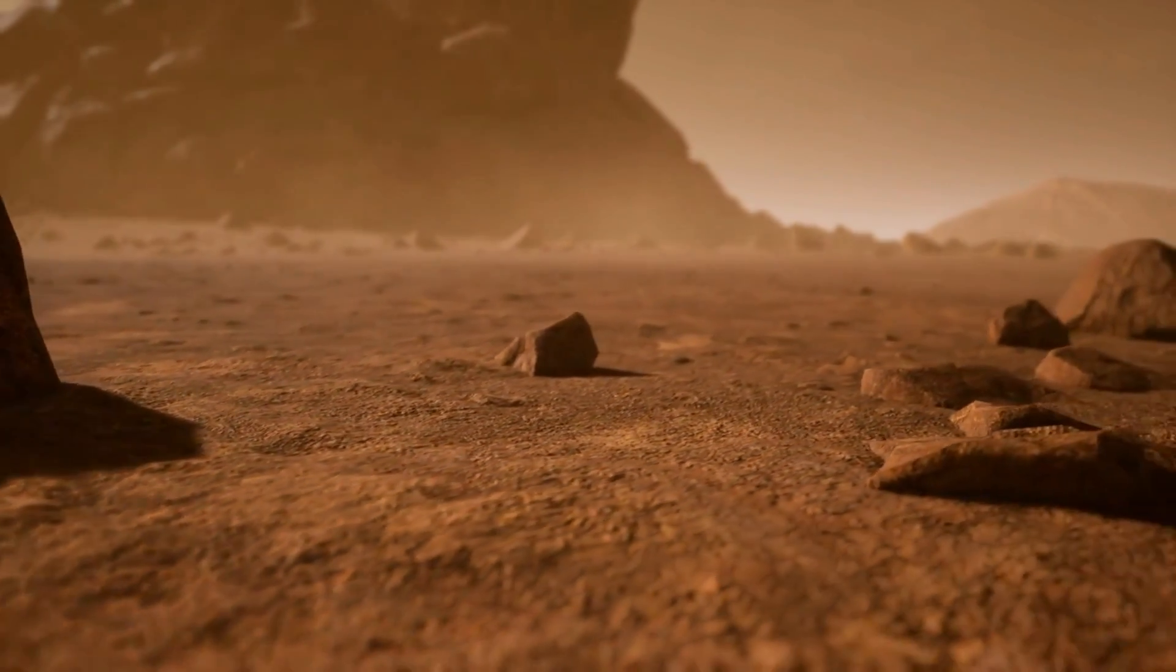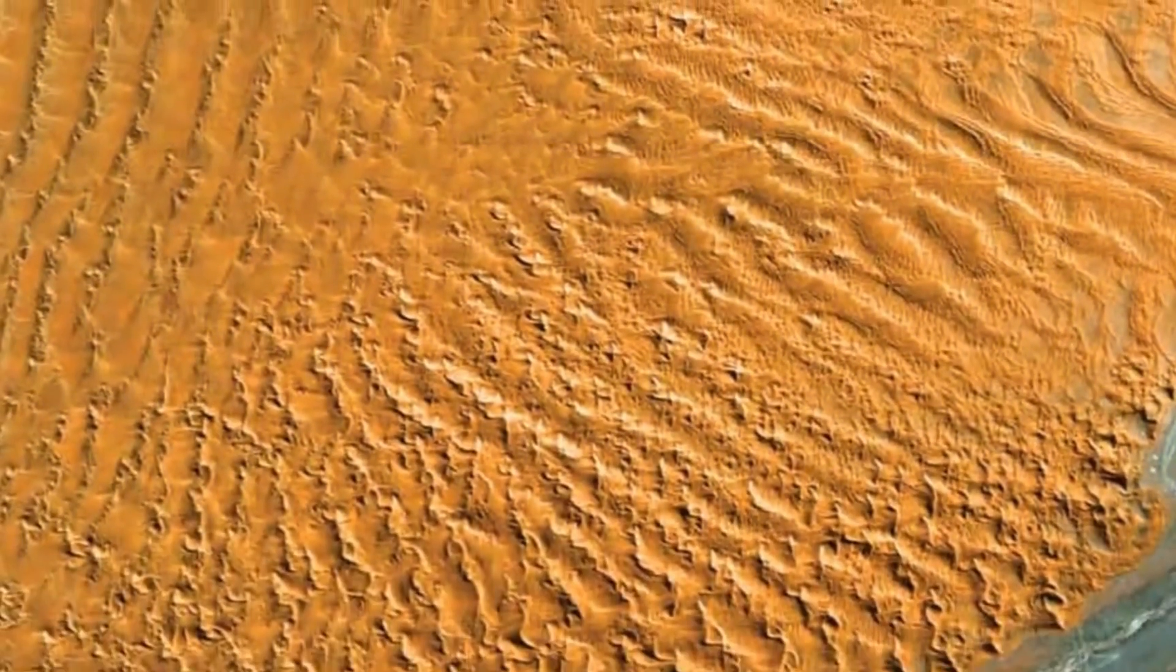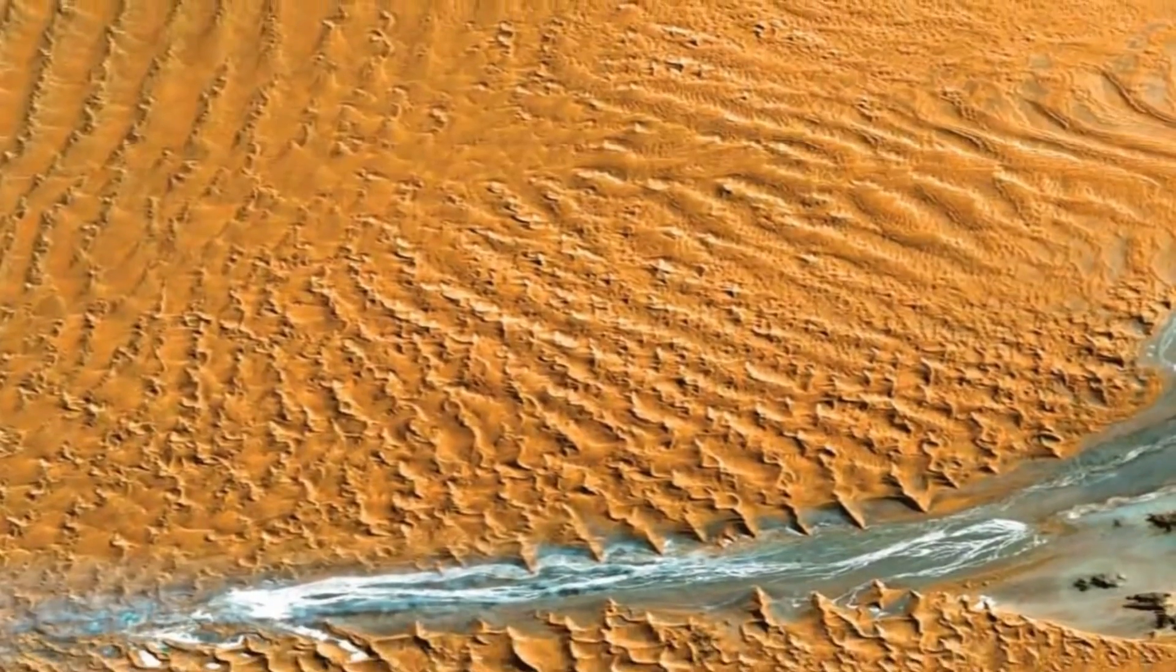Due to the climate system operating on Titan, with its own seasons and wind patterns, a dune system, composed of tholins, soot, and organic substances, was formed.